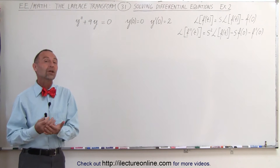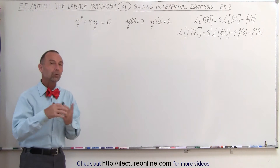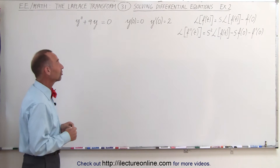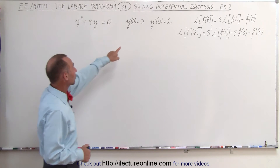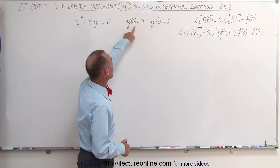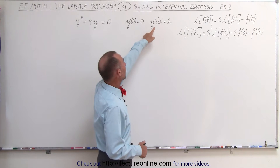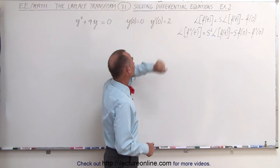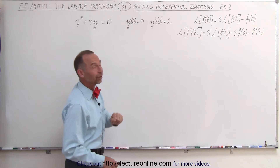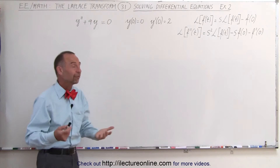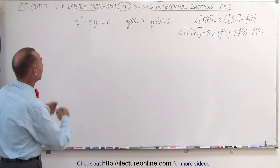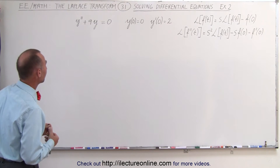Again, it's a homogeneous equation. Later on we'll show you how to solve the non-homogeneous equations. Here are also the initial conditions: y at 0 equals 0 and y prime at 0 equals 2. Of course, we still have the equations up there to help us figure out how to find the Laplace transform of a differential equation.